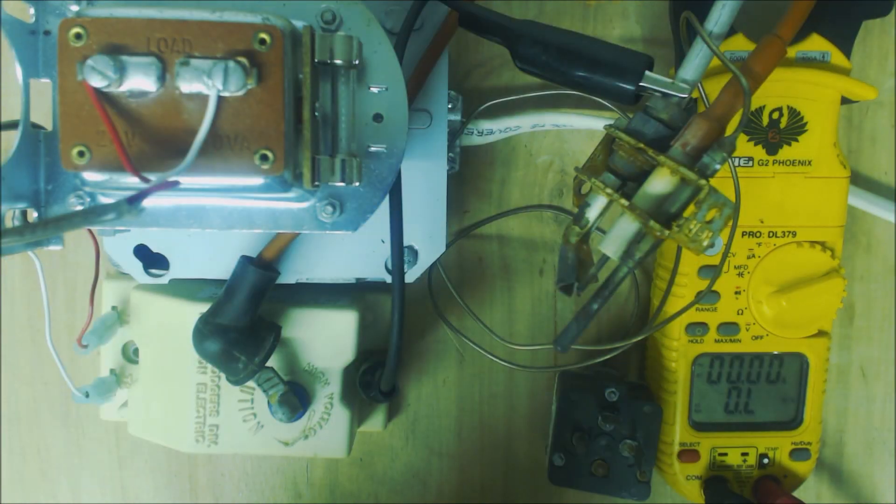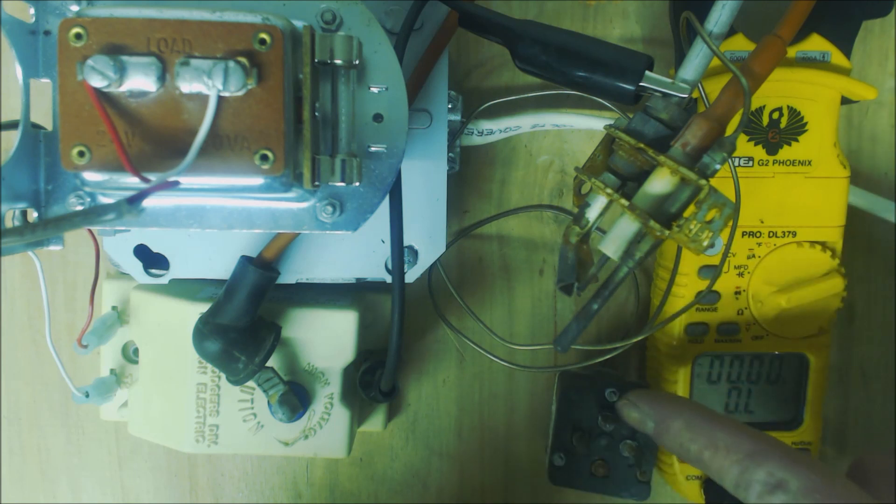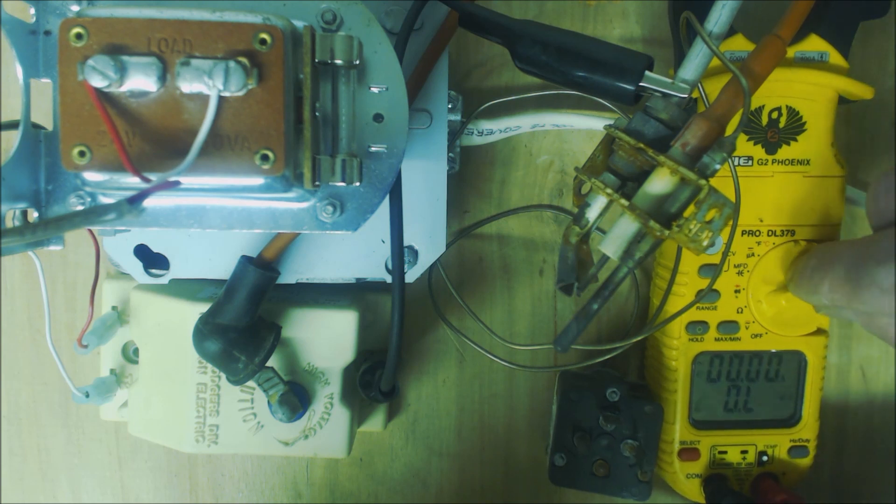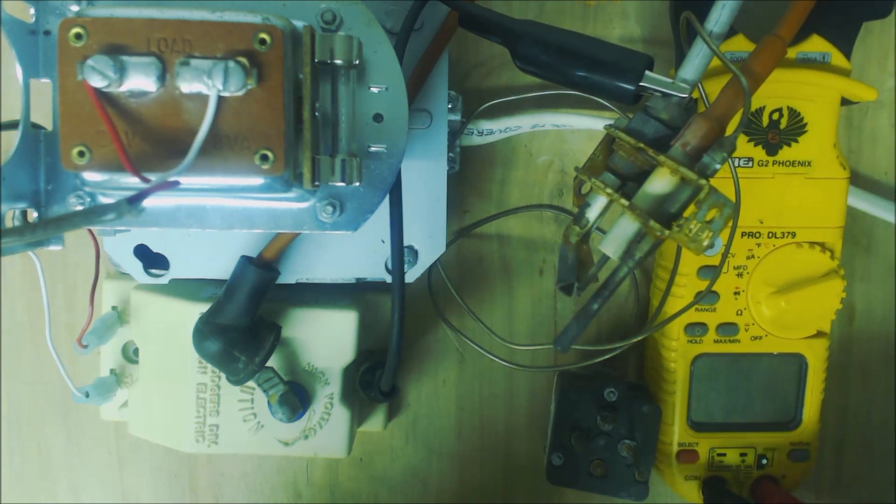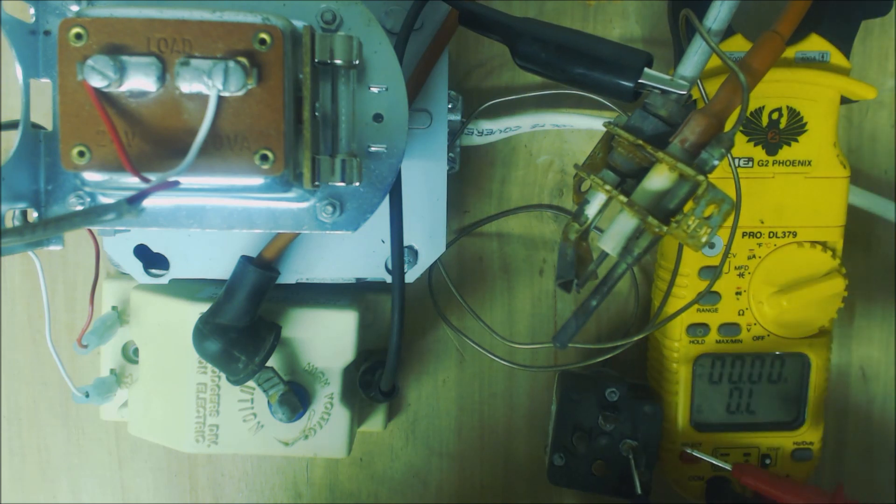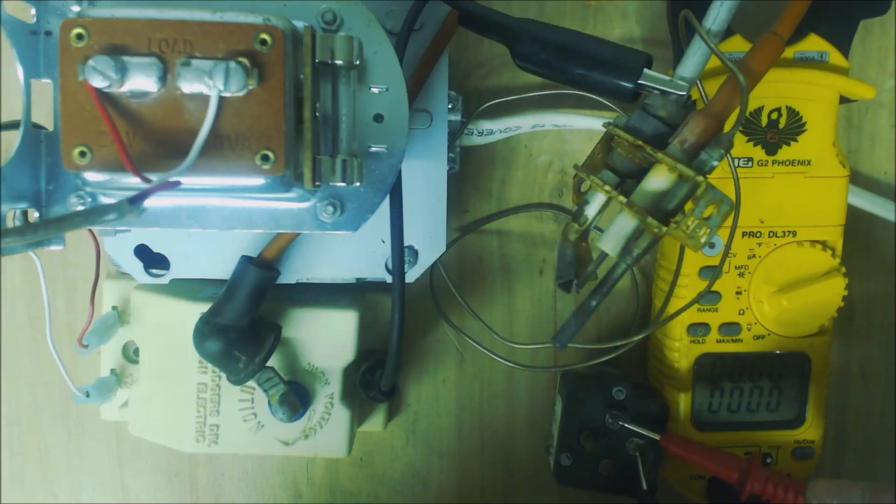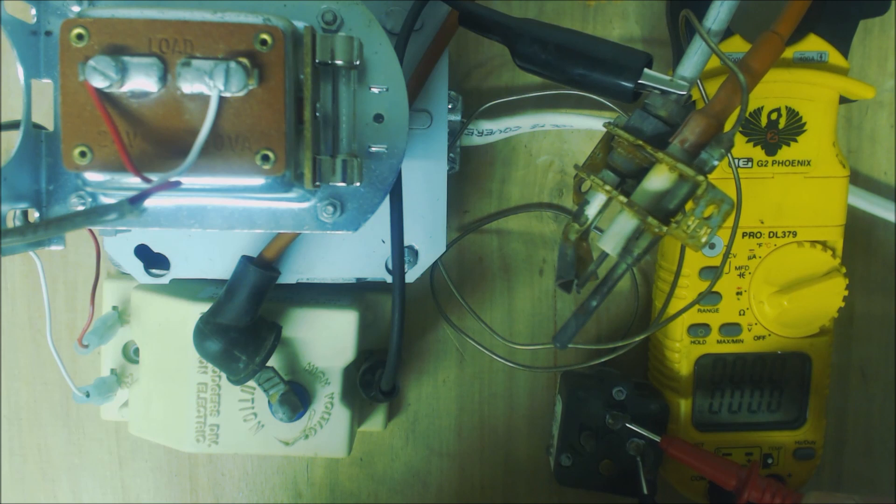So we have terminals one, two, three and four, and we have our multimeter set to ohms. I'm going to make sure it doesn't turn off on us. We'll take a resistance reading between three and four. You see we have zero ohms of resistance.